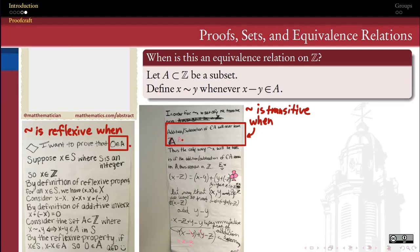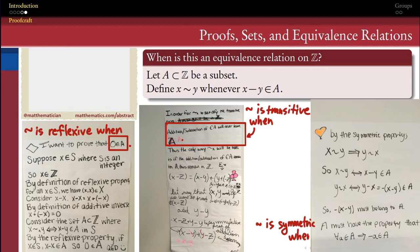Last but not least, every equivalence relation is not only reflexive and transitive, it's also symmetric. And your groups deduced that in order for this relation, in particular, to be a symmetric relation, the set A has to have the property that every element of A also has its additive inverse belonging to A.